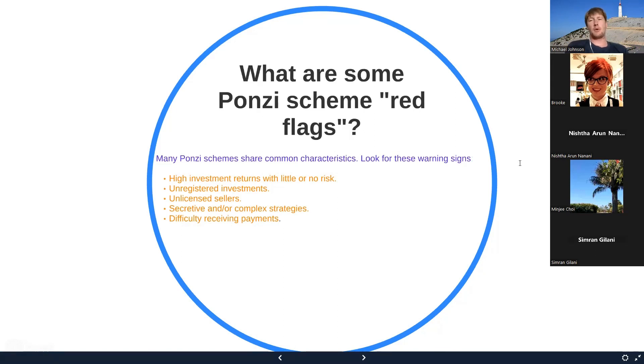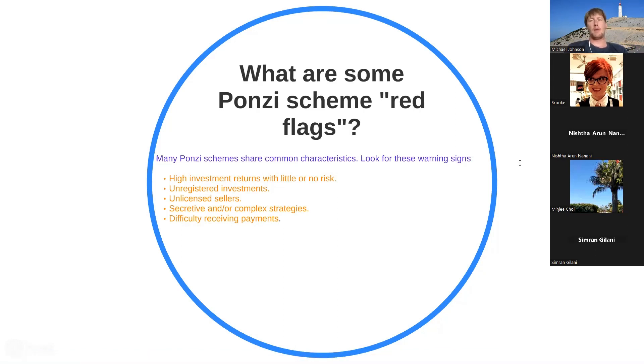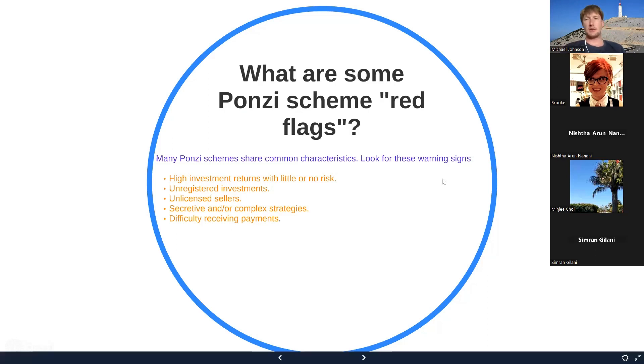Big companies can still be Ponzi schemes. Minji, thanks for bringing up Minji. Big companies could be Ponzi schemes still. I'll show you an example after this presentation of Bernie Madoff, who was the biggest Ponzi scheme in history. And he stole $60 billion in total. So even if they're a big organization, they could still be a Ponzi scheme. I'll show you a video on that after this.